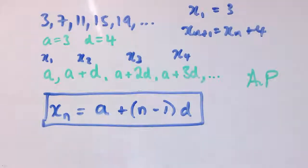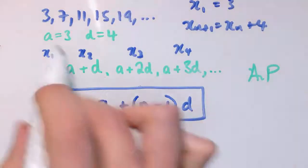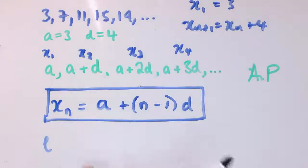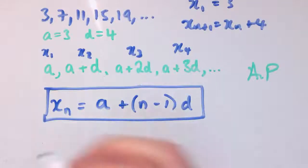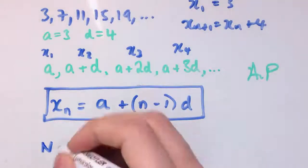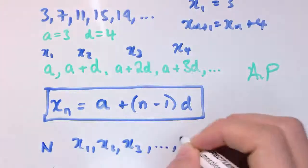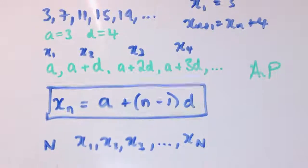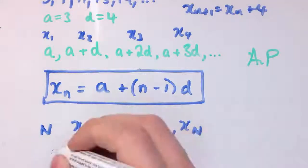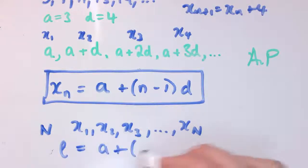It's a little bit confusing, but sometimes people also use the letter l for the last term of an arithmetic progression. In these ones I assume they go on forever, but let's say it didn't go on forever and it just had a certain number of terms. Let's say it's got capital N terms, so it goes x₁, x₂, x₃, and at some point it gets to x capital N and then just stops.